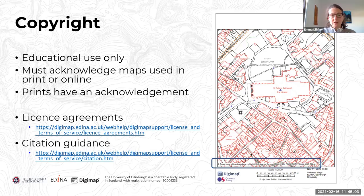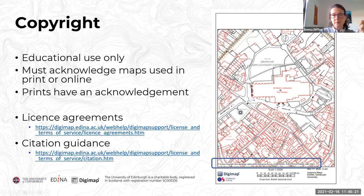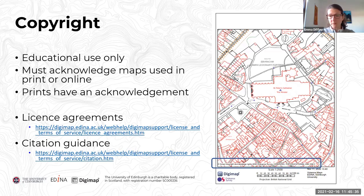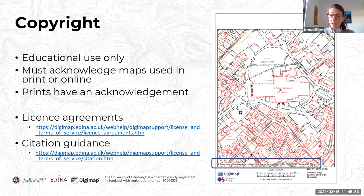There are two types of data in Digimap: open data and licensed data. The information panel associated with each dataset will tell you which license applies. Open data can be used for any purpose within reason. Licensed data has specific education license conditions attached — these education licenses permit things that may not be allowed under a commercial license. If something you want to do doesn't fit within the Digimap license, there are ways to find the right license and we can help.